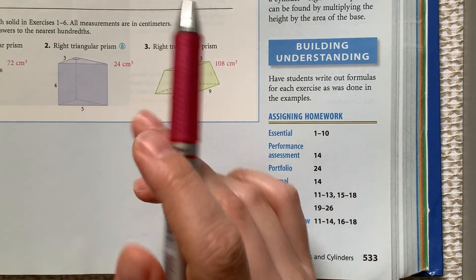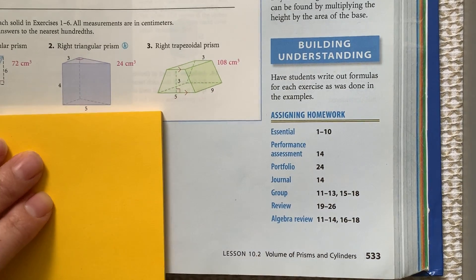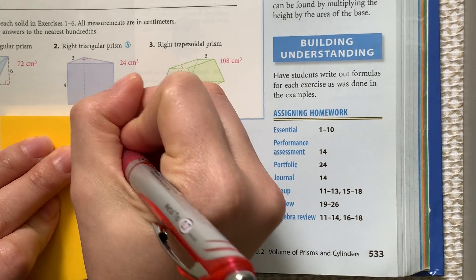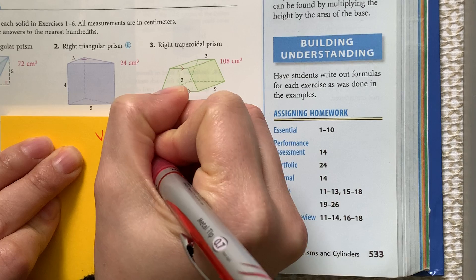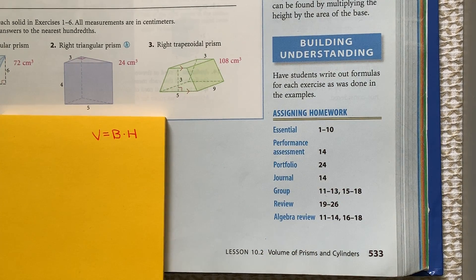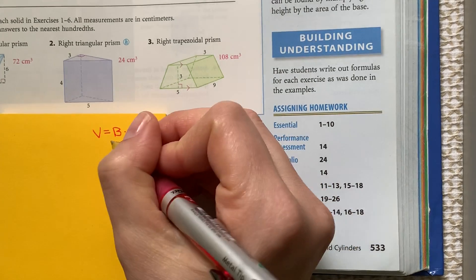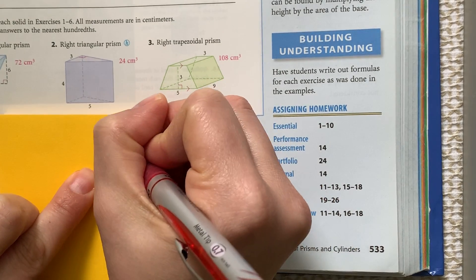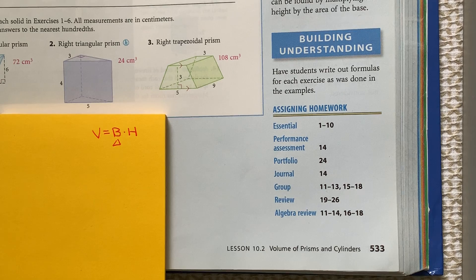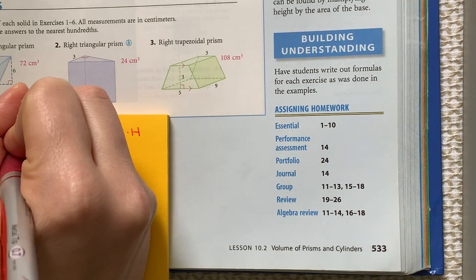When we find the volume of a prism, the volume is equal to big B times big H, where big B is the area of the base and H is the height of the prism. And so this is going to be the triangle. And so what we really need to do is find the area of the base first.